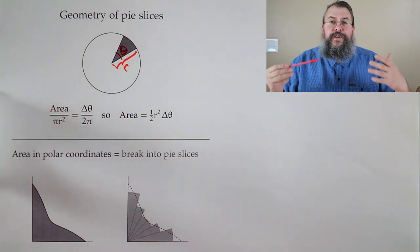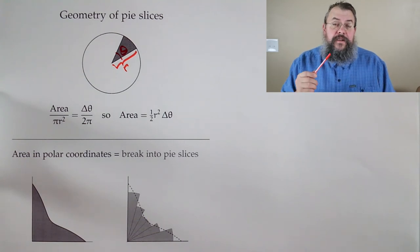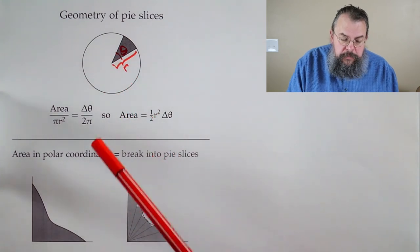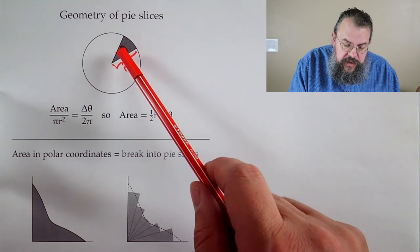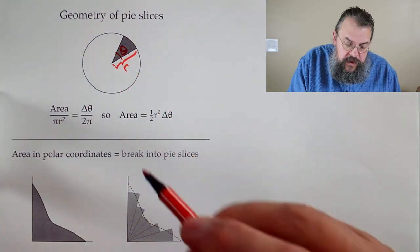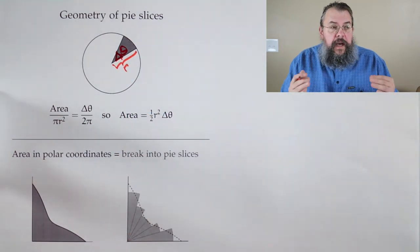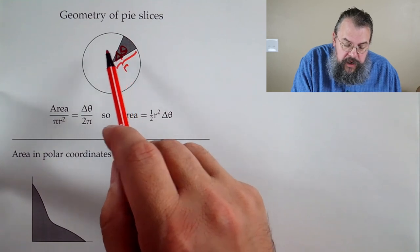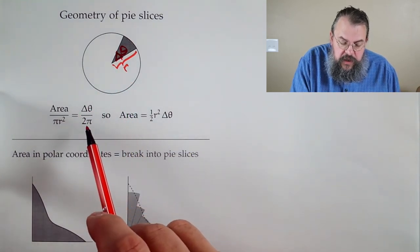Think of that as like a percentage, the percent of the circle that the area currently contains. That's going to match the percent that we swing around. So in other words, if we think of this angle here as delta theta, instead of theta, like a small change in theta. Then what we have is that this angle compared to the whole way around is the small change in the angle over 2 pi.